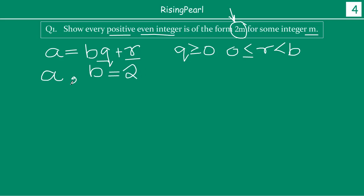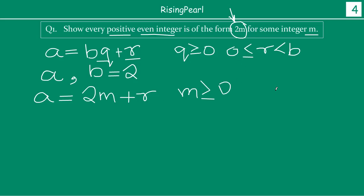So for any integer a and b equal to 2, we can say that a equals 2m plus r. Instead of using q, we use m since that is the variable in the question. So: a equals 2m plus r, such that m is greater than or equal to 0, and r will be greater than or equal to 0 but less than b, which is 2. So the possible values of r are 0 or 1.